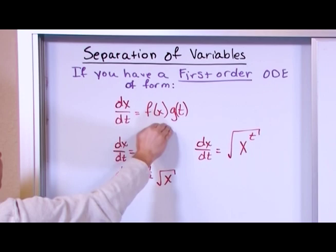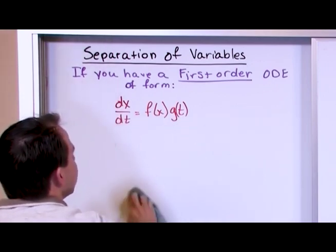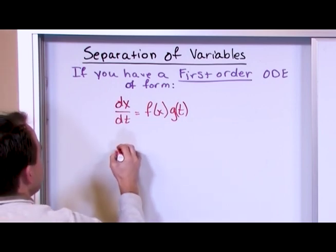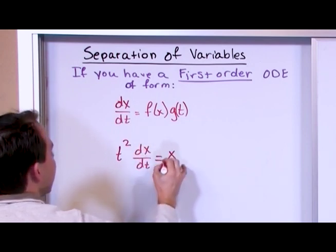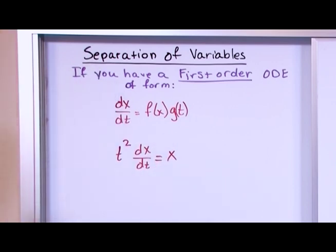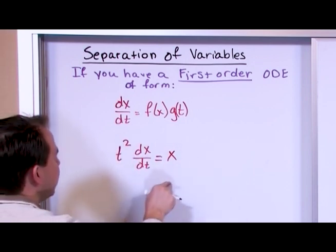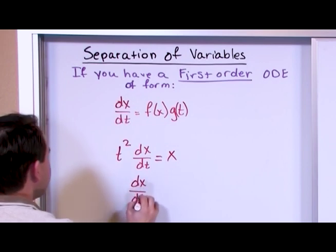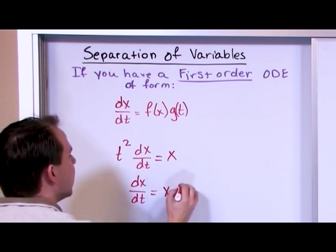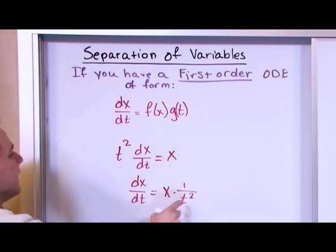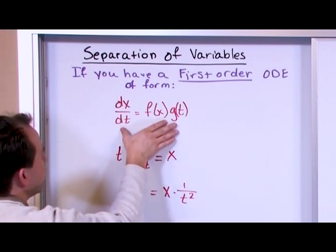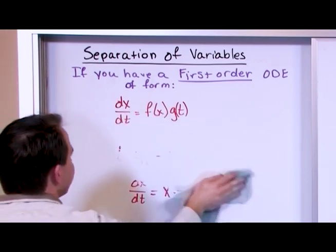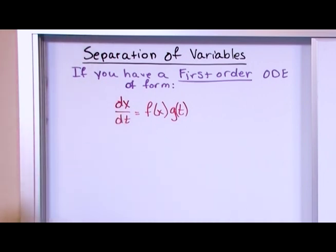That's probably the number one thing you have to know. We're going to get into variation of parameters and other solution methods, and you're going to have to make sure the equation you're using it for is exactly the right form. So dx/dt equals some function of x — whatever it is, could be a giant polynomial — multiplied by some function of t, could be cosine of t, but it has to be a function of x and a function of t multiplied together.